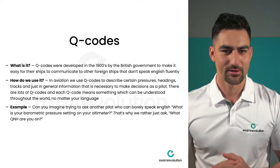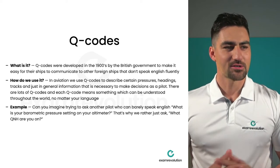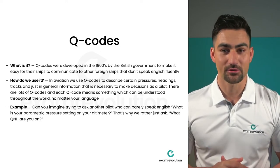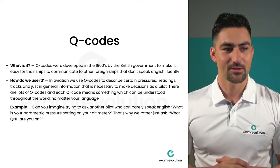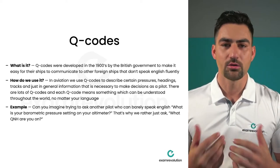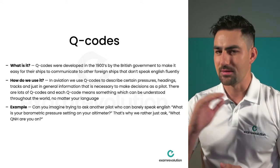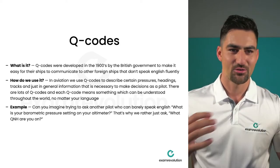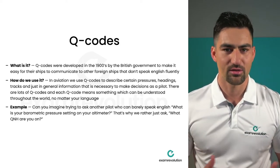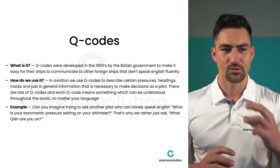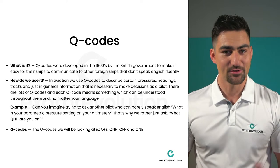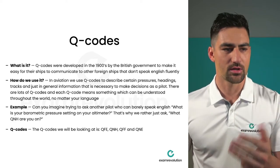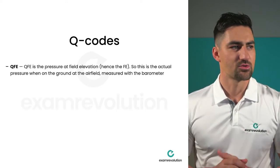For example, imagine flying in a foreign country and trying to ask another pilot 'what is your barometric pressure setting on your altimeter?' in English — they might not understand. Instead, you simply ask 'what QNH are you on?' and they immediately know what you mean. Everyone throughout the world knows these Q codes. The ones we focus on are QFE, QNH, QFF, and QNE.